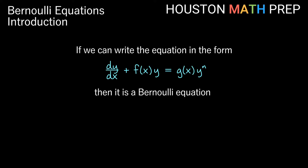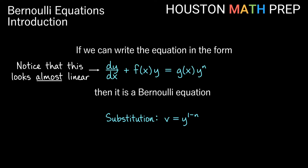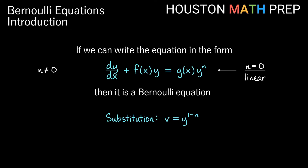The substitution we make is v equals y to the 1 minus n. If you look at dy/dx plus f(x) times y equals g(x) and stopped there, that would actually be a linear equation. So a Bernoulli equation almost looks linear — if the power of y on the right were 0, it would be linear. We assume the power of y is not 0. Also, if n equals 1, this is actually a separable equation. So assuming n is not 0 and not 1, this is a Bernoulli equation.